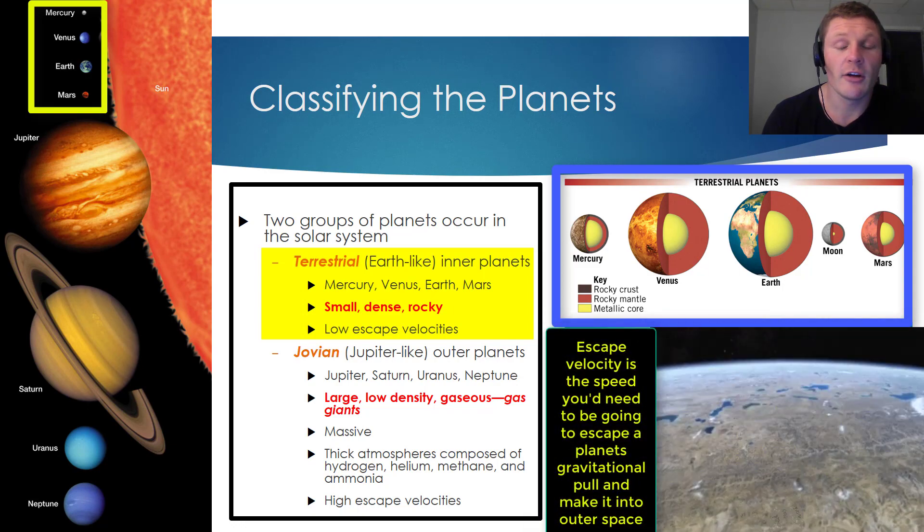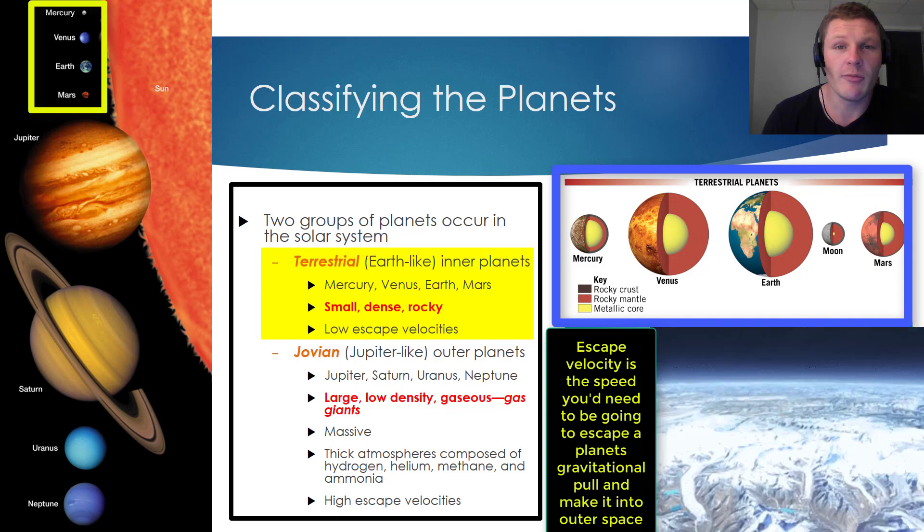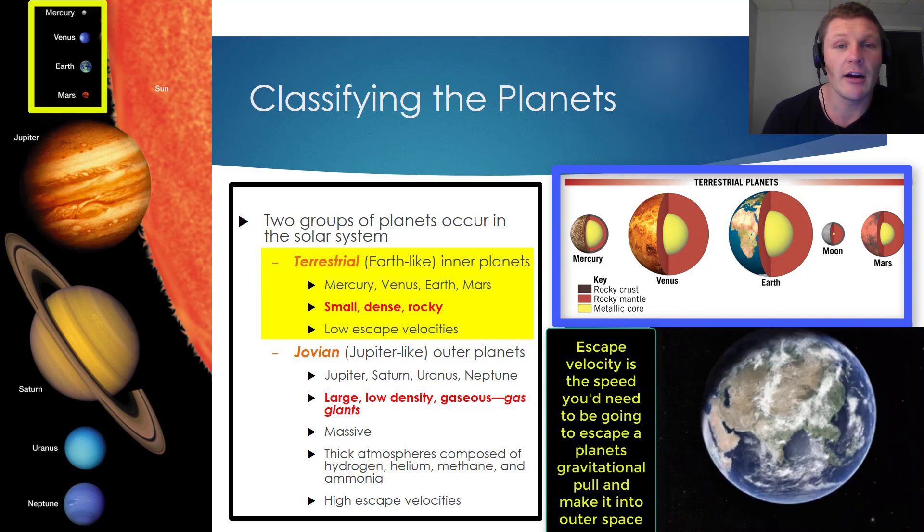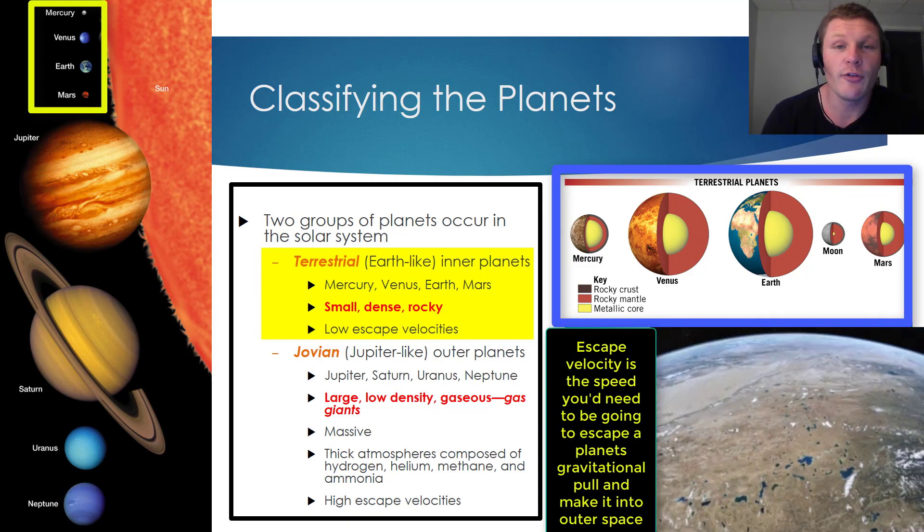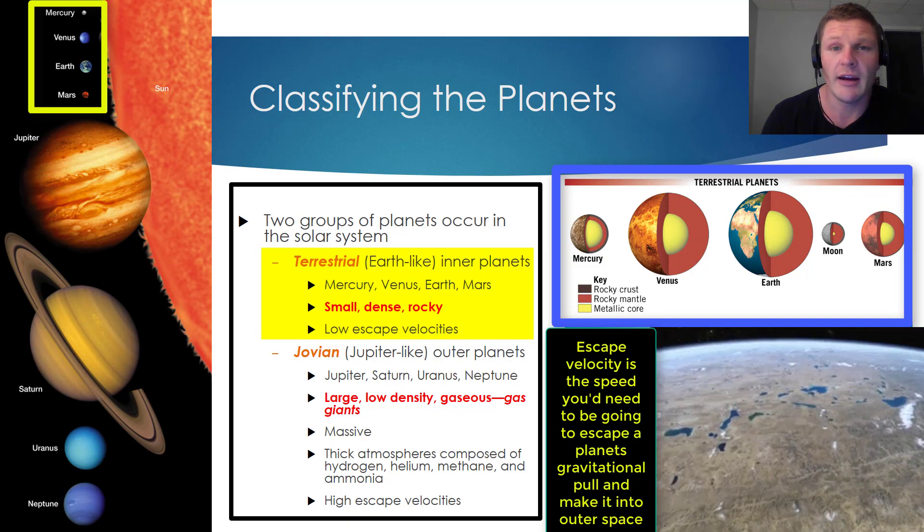Due to their relatively small sizes, gravity is relatively weak on these planets, so they all have low escape velocities. What that basically means is, if you wanted to launch a rocket off the surface of one of these planets, the rocket wouldn't have to go as fast to escape these planets' gravity as it would one of the larger Jovian planets.